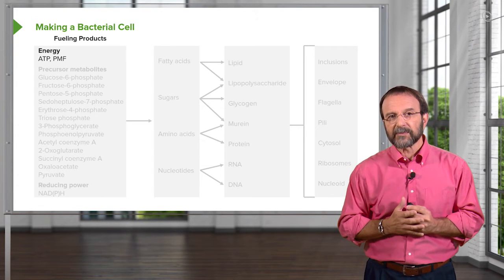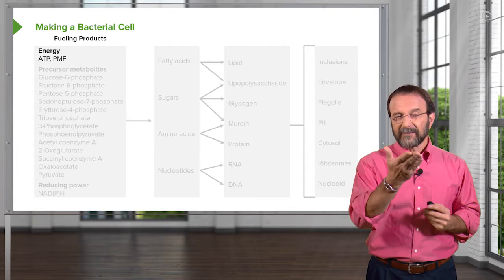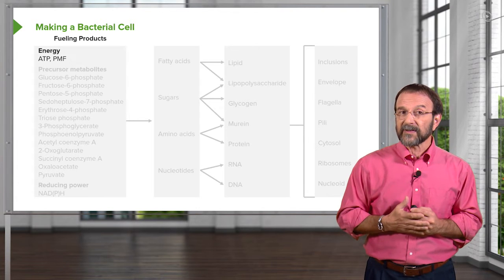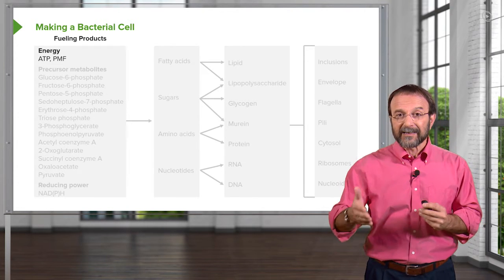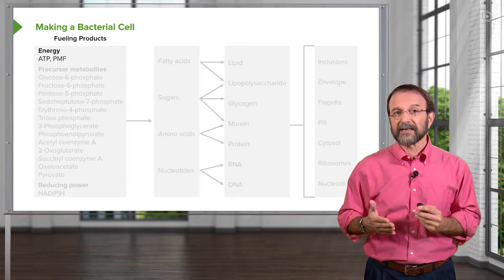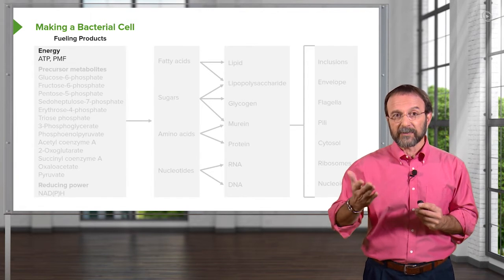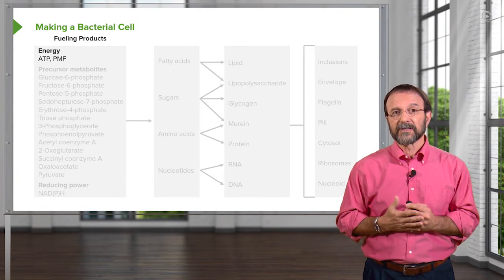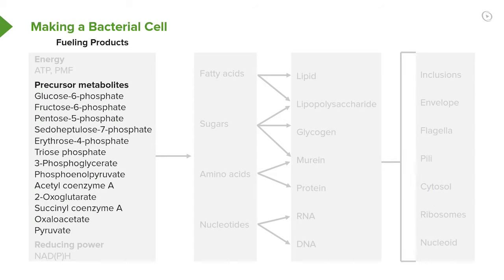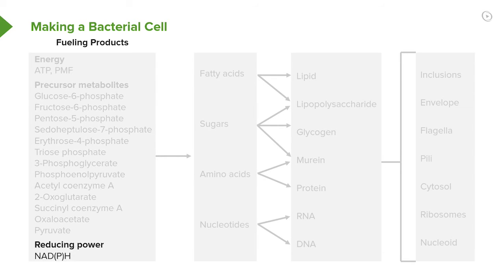Let's look at it in a little more detail. Let's start with the fueling products. Bacteria have to make energy in the form of ATP, and they use a hydrogen transport mechanism to generate the proton motive force in order to produce ATP. There are lots of precursor metabolites that are needed, and some of these need to be acquired. Some of them can be synthesized. They include a variety of sugars and acids like oxaloacetate and pyruvate. And finally, we need reducing power in the form of NADPH.